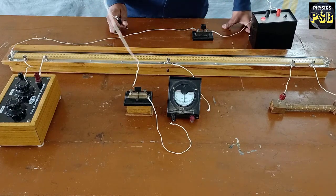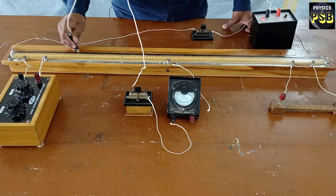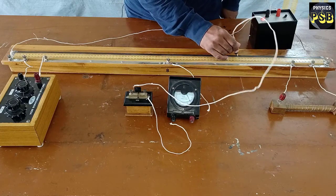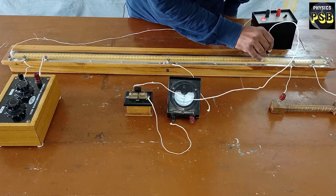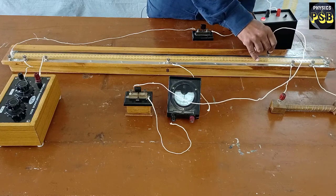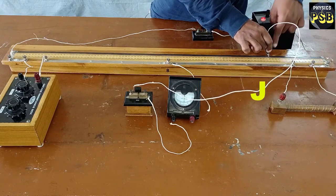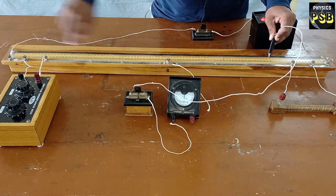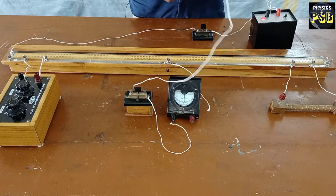Now I will find out the balancing area. I press the jockey on the right end and slowly move towards the left. At one point the galvanometer reading is zero. This point is called nil deflection. Here the bridge gets balanced and I call this point J. The length AJ is taken as L1, and the length BJ is known as L2. This is how one can find the balancing length in a meter bridge.